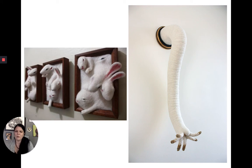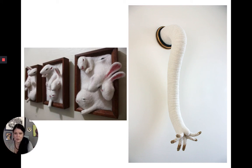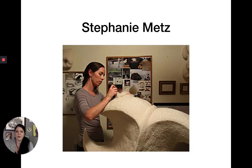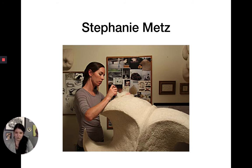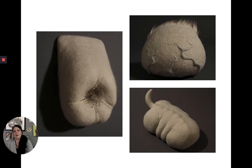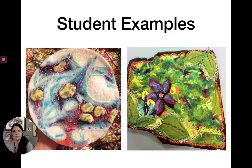Zoe Williams mostly works in white with a little bit of embellishment — sometimes she adds beading. Stephanie Metz also has an MFA in sculpture. She used to do large steel-welded pieces, then discovered needle felting and its portability. She's been working in needle felting for several years, using about five needles at a time for large-scale pieces. Her work is biomorphic — it has links to the natural world but is abstracted, strange, and surreal.